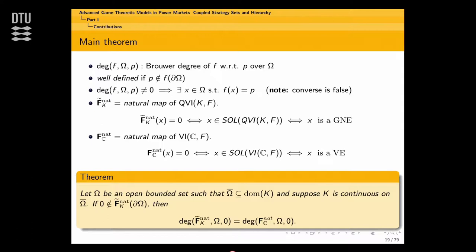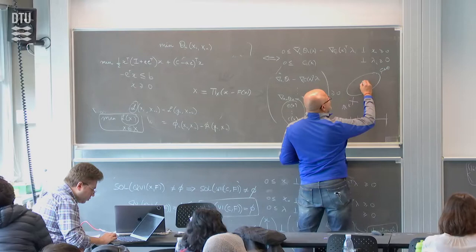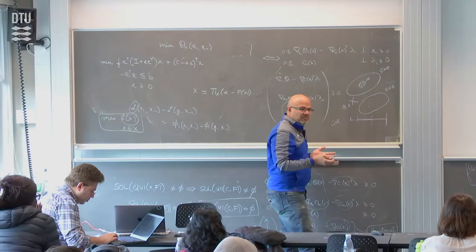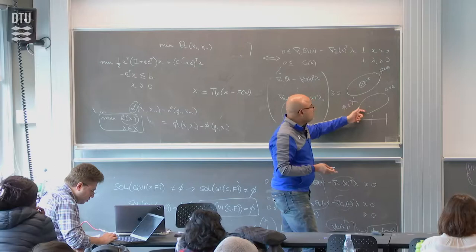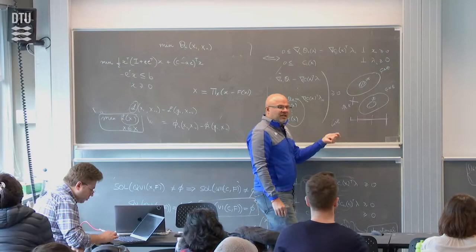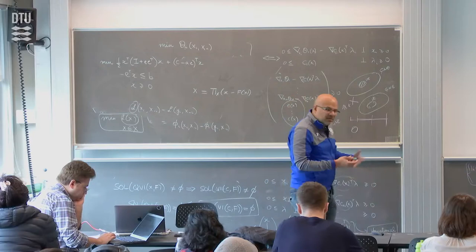If a VE exists, the degree being 1 is not guaranteed, but if the degree is nonzero, the VE exists. So if the VE degree is nonzero and this degree is nonzero, the GNE exists. The question is: does the VE inside always exist, or could you have GNEs but no VE? What we are trying to establish is a condition under which this does not happen — if the GNE set is nonempty, then there is a subset inside it which contains the VE. The reverse always holds: if a VE exists, it is always a GNE.